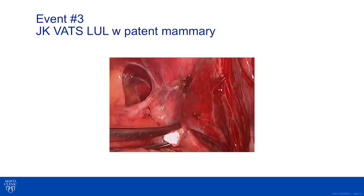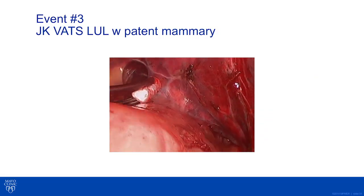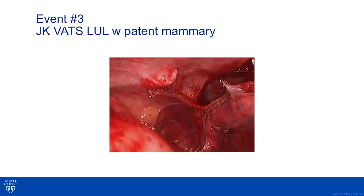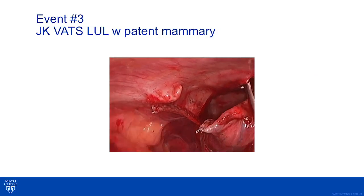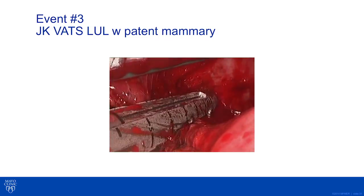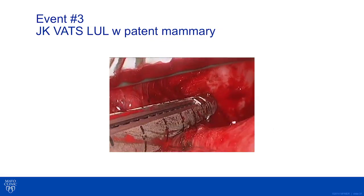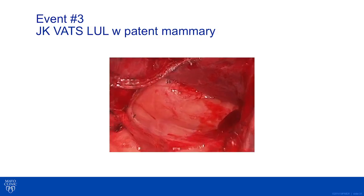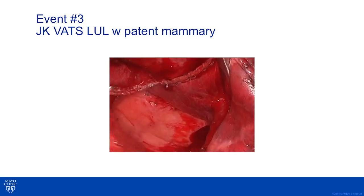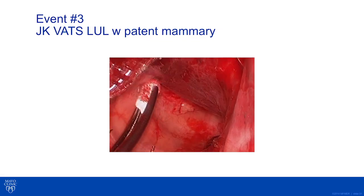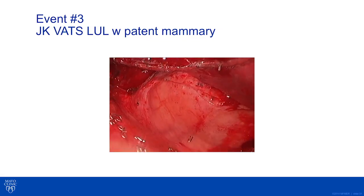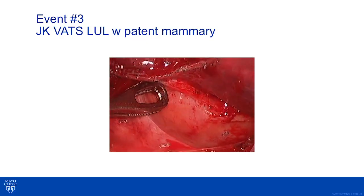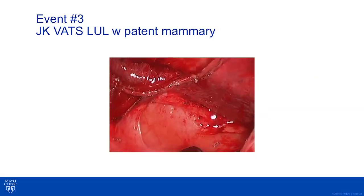Dissecting the lung off the pericardium is continued. A stapler is used to divide the lung away from mediastinal attachments, leaving a small rim of lung attached to the patent mammary. A second stapler firing additionally separates the lung from the patent mammary. By closely examining the area with clips underneath scar tissue, one can see the patent mammary just medial to the staple line, with the ring clamp demonstrating that location. A small amount of residual lung is then stapled once the patent mammary is identified, safely preserving it.